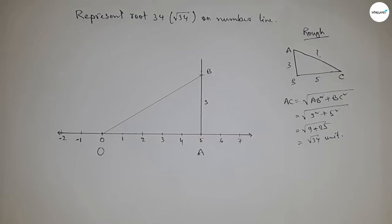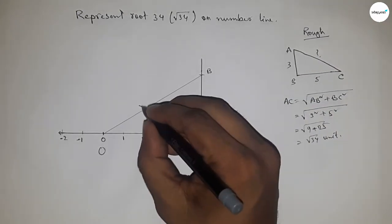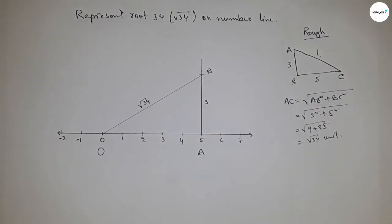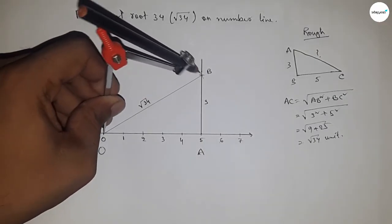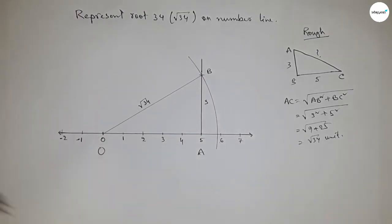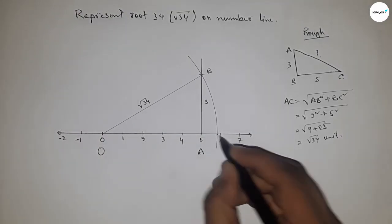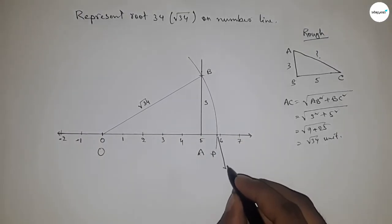From this picture we can say that this is root 34 units. Now taking the length OB by compass and drawing an arc which meets the number line at point P, and this is the representation of root 34 on number line.